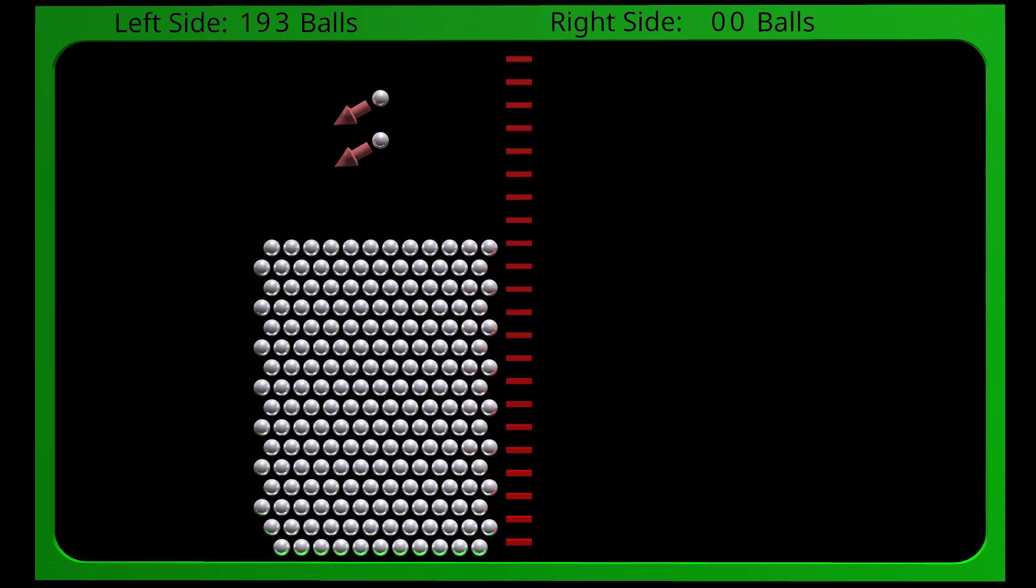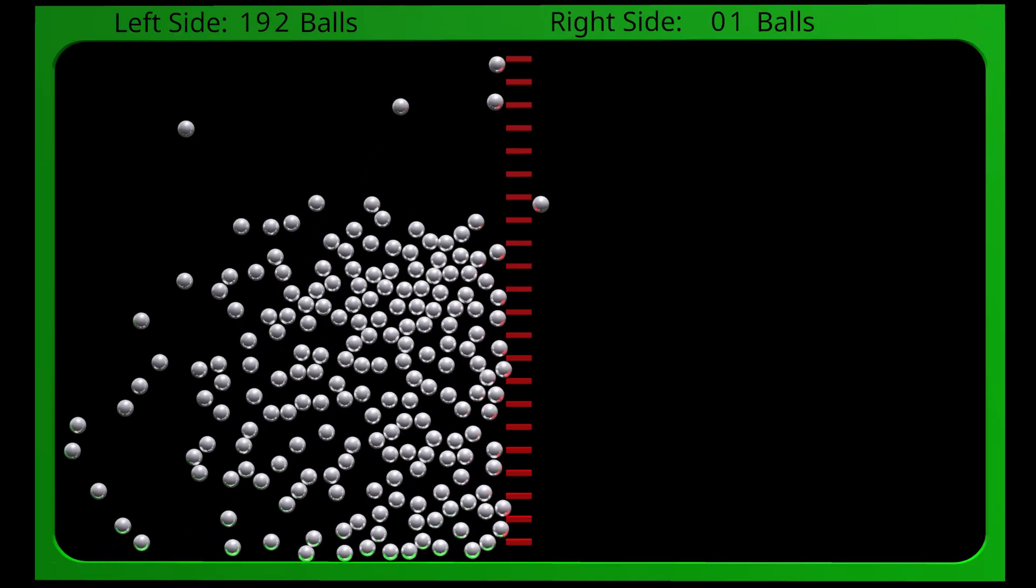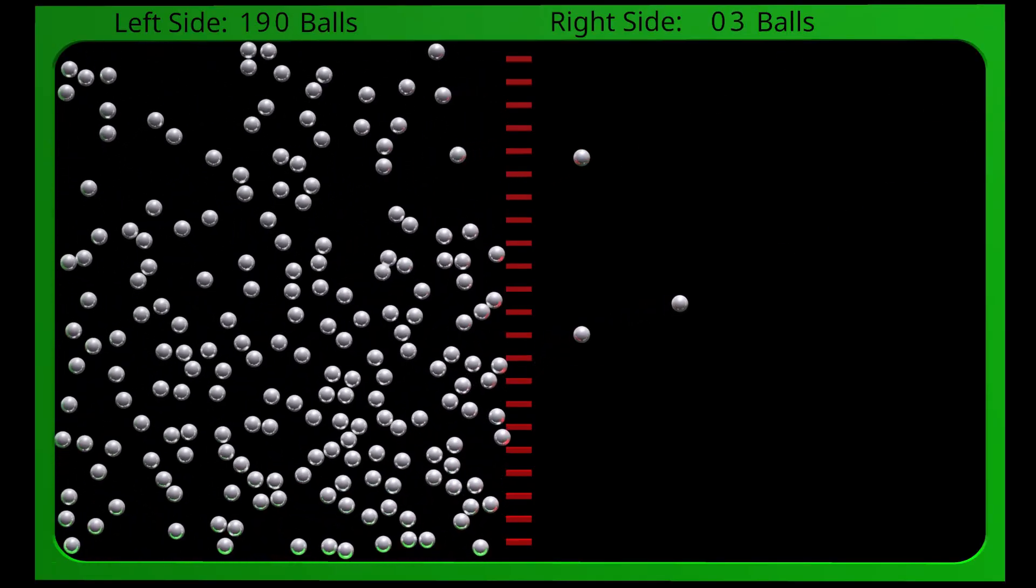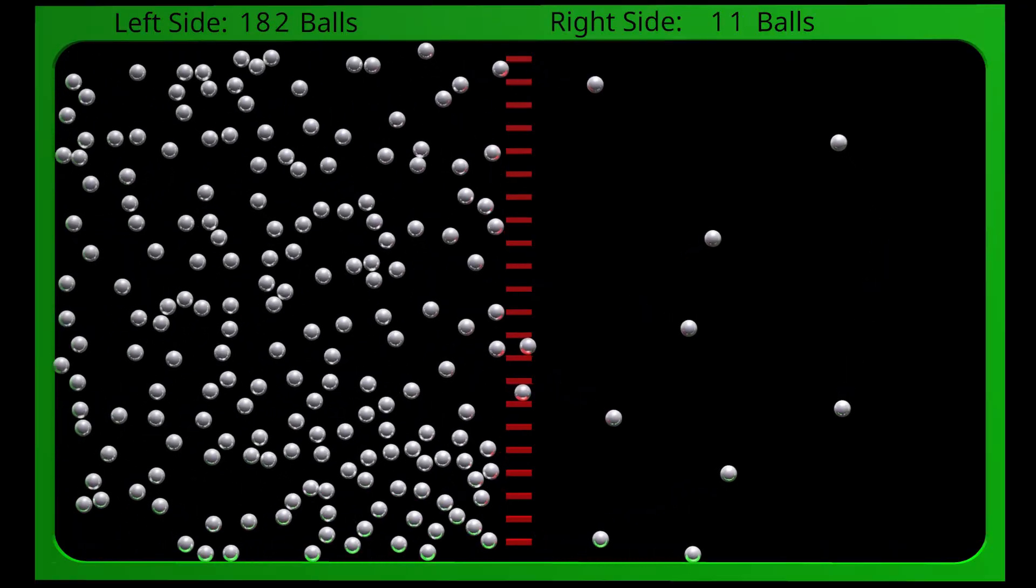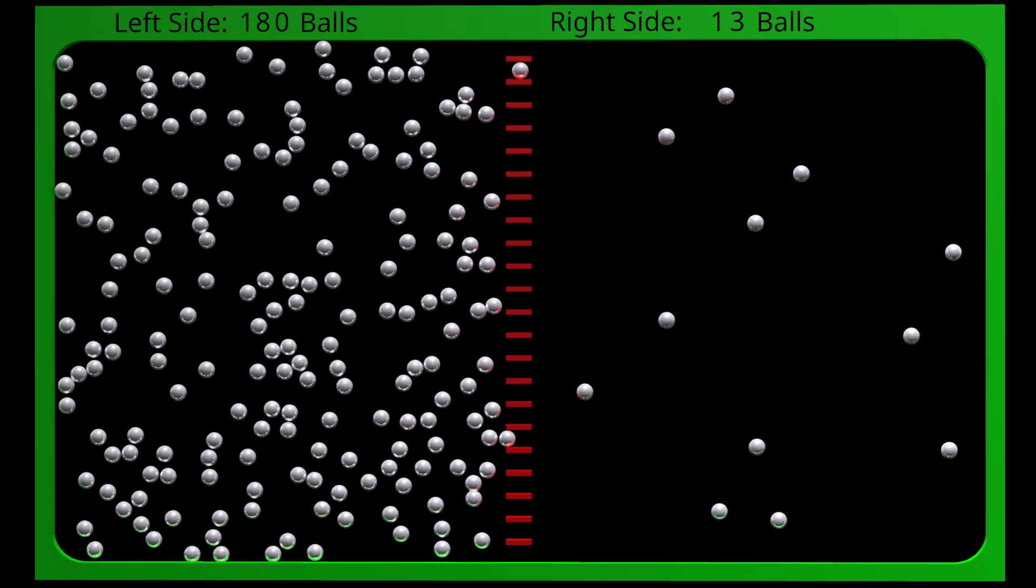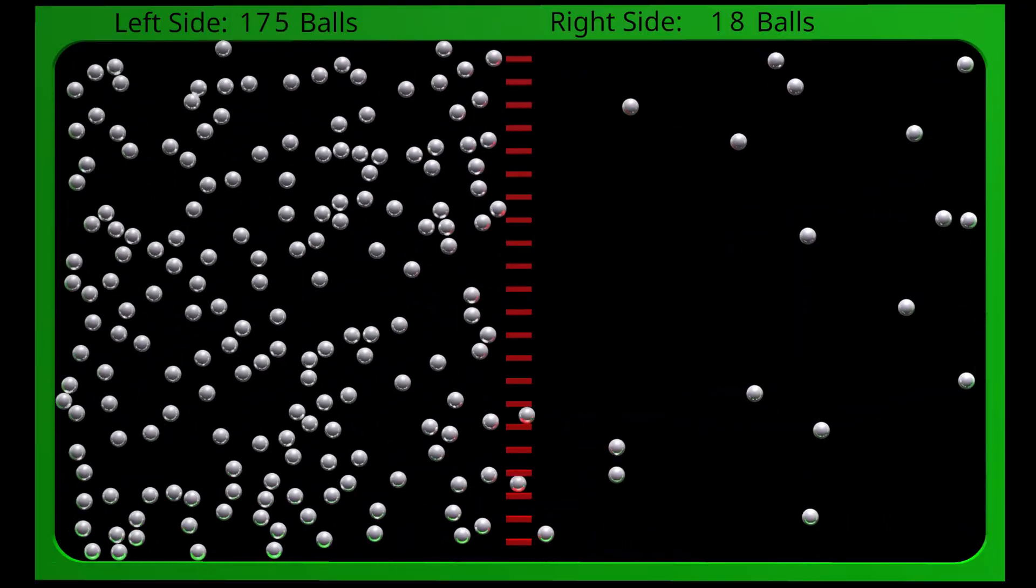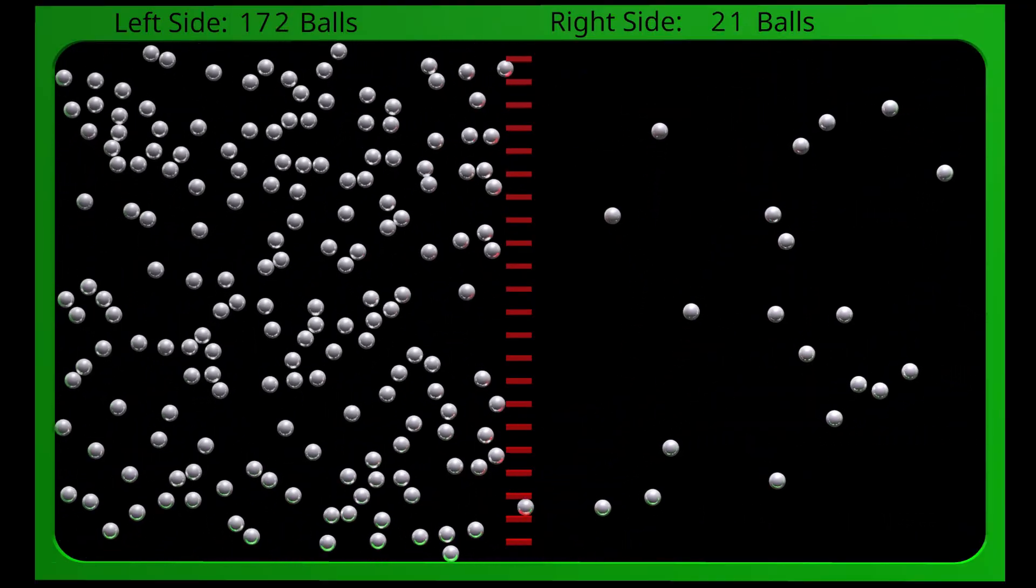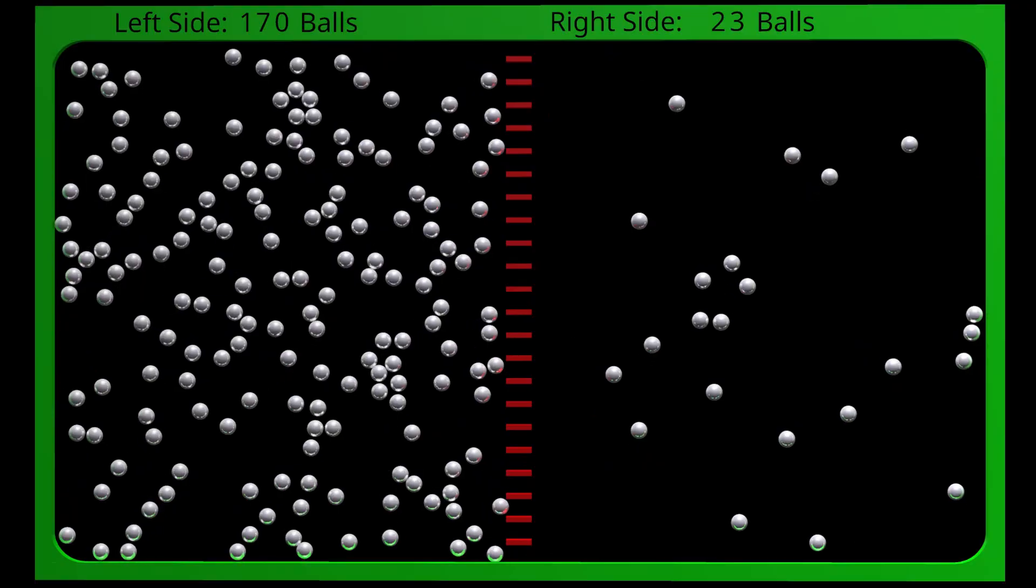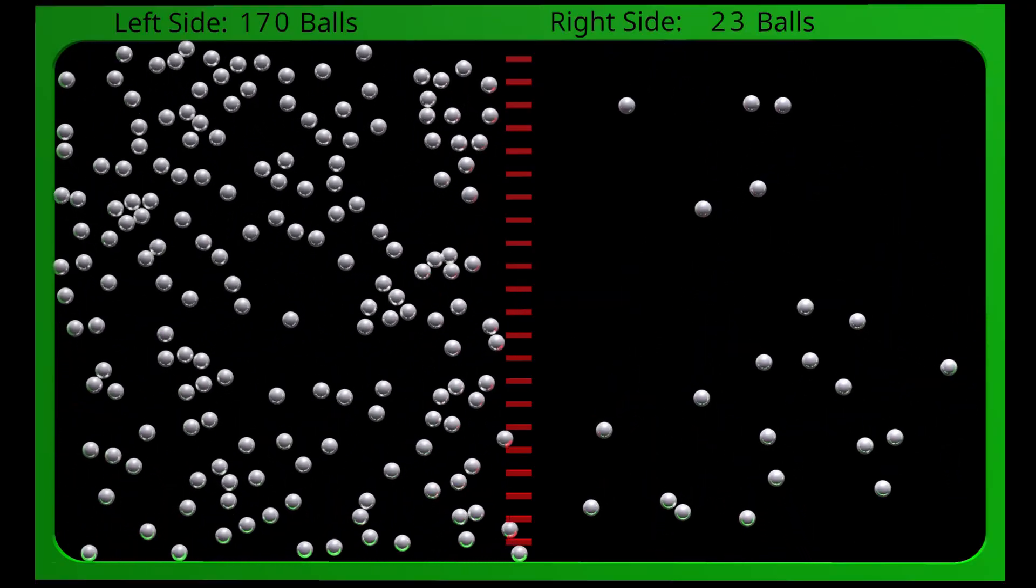On the other hand, this is an example of diffusion. Here, there are only balls present. Therefore, these balls will eventually be spread out equally on both sides of the barrier, if we wait long enough.